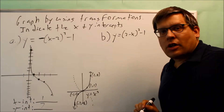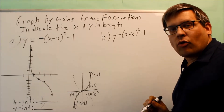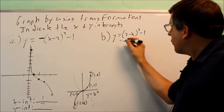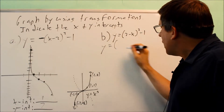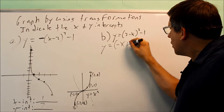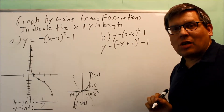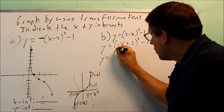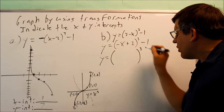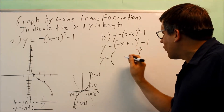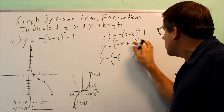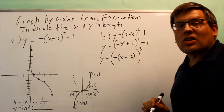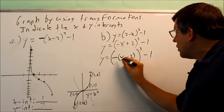Now let's look at this next example. This one is not written in the right form. In order to use transformation rules, you want to make sure that x comes first and there's nothing in front of it. So I need to put this into proper form — I'll switch positions, and I have a negative here which becomes a plus two. I have an extra negative in front of the x that I don't want, so I'll factor it out using two sets of parentheses. Factoring out the negative switches the signs, giving me positive x minus two on the inside, all raised to the power of three.